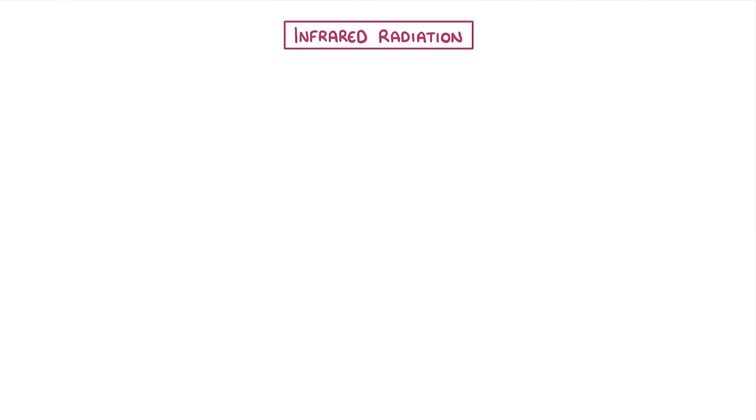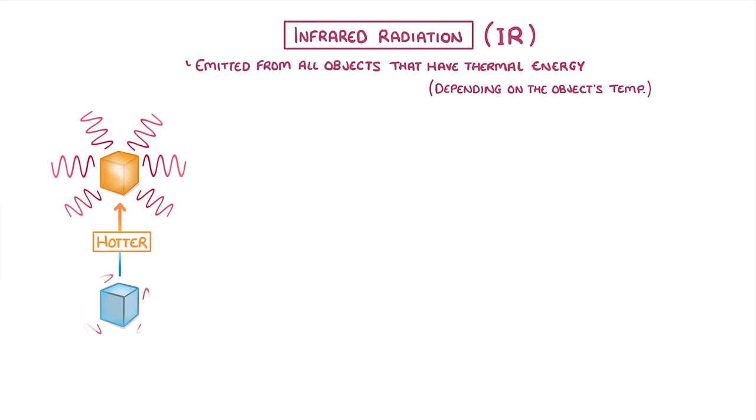Next up we have infrared radiation. Infrared, or IR radiation, is emitted from all objects that have thermal energy, or heat energy, with the amount that gets emitted depending on the object's temperature. So the hotter the object, the more infrared radiation it will emit.